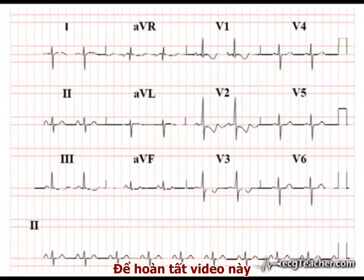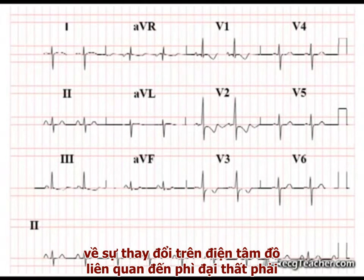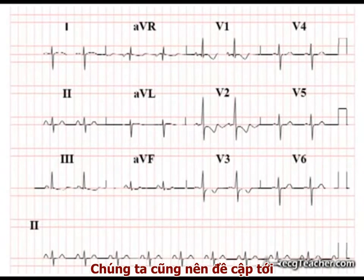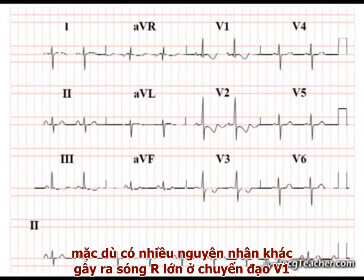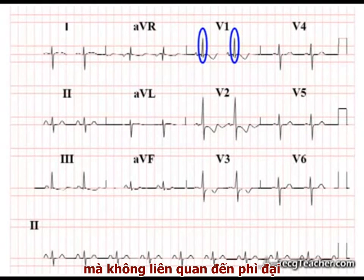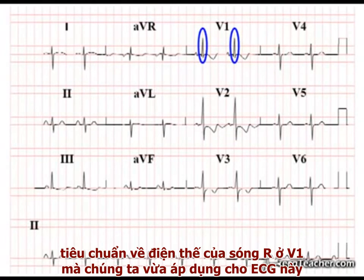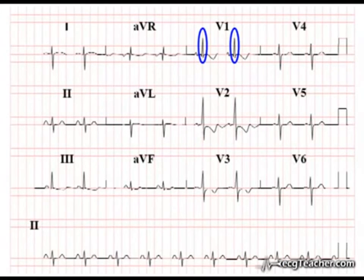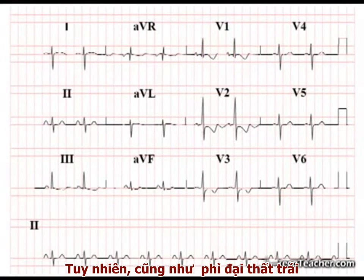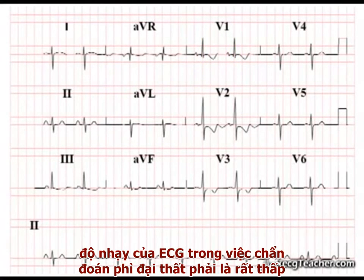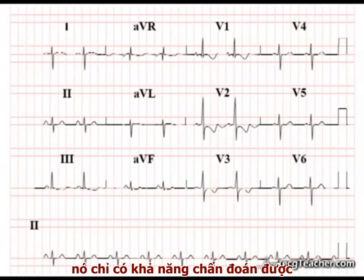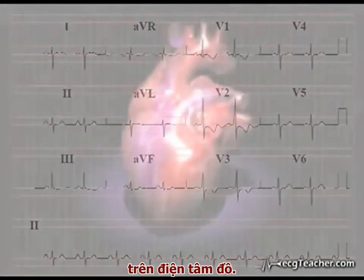To complete our brief discussion of the ECG changes associated with RVH, it is worth mentioning that although there are other causes of a dominant R wave in lead V1 unrelated to hypertrophy, the V1 R wave voltage criteria we've just applied to this ECG have reasonable specificity. However, as for LVH, the sensitivity of the ECG in the diagnosis of RVH is poor. In fact, it is only possible to diagnose about one-fifth of RVH cases from ECG changes alone.